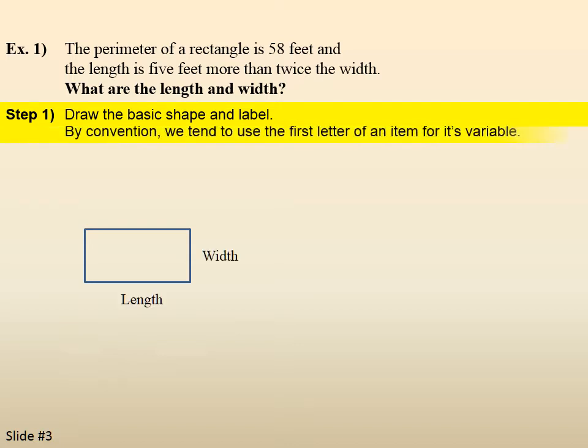By convention, we tend to use the first letter of an item for its variable. So, length would become L, and W would become width. Step 2, now we start translating.